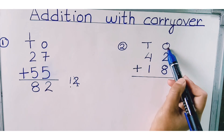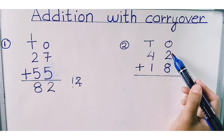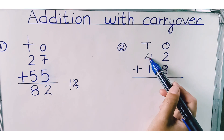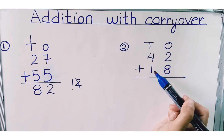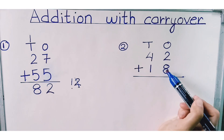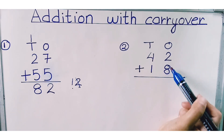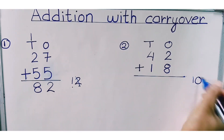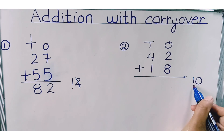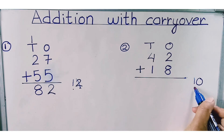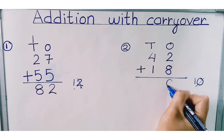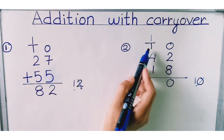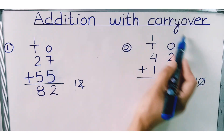Now let's try another example. Write the tens and ones unit. The numbers in ones place are two and eight, and the numbers in tens place are four and one. We have to add the ones place first. Two plus eight is equals to ten. Zero is in ones place and one is in tens place, so write zero in ones place and carry the one forward to tens place.